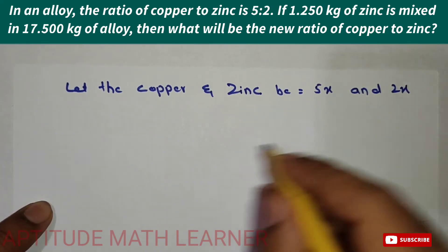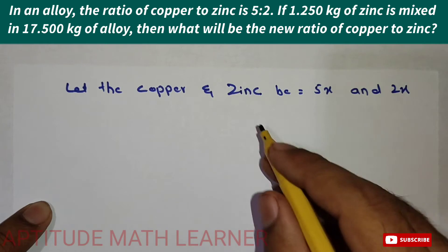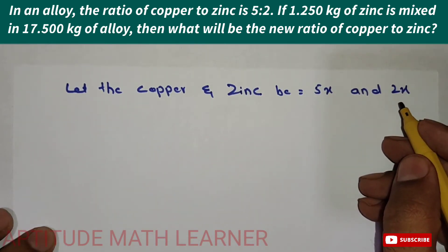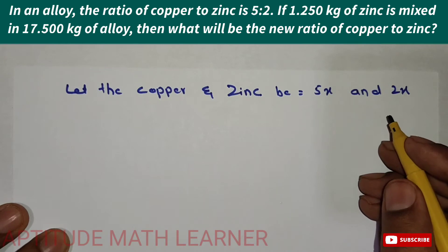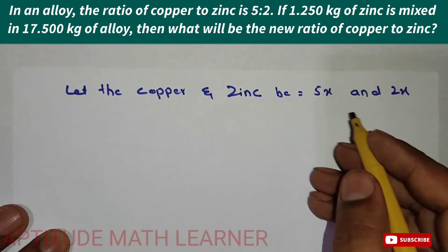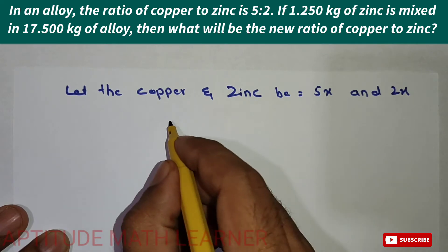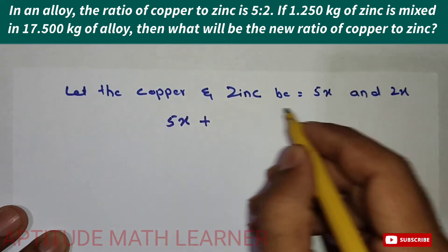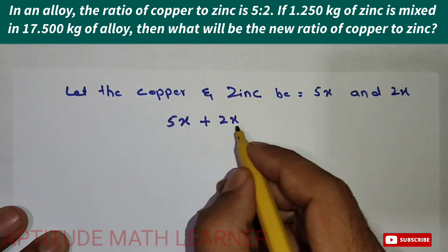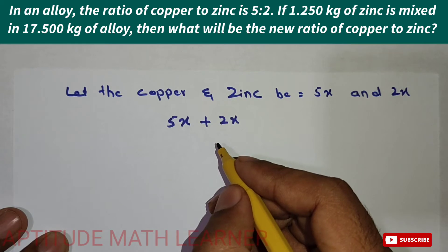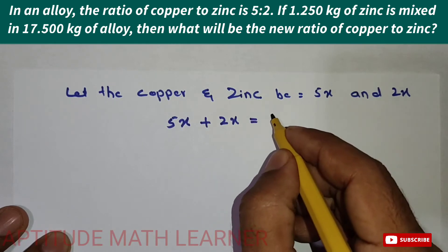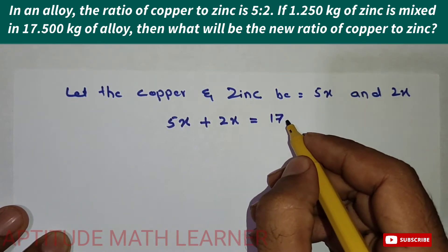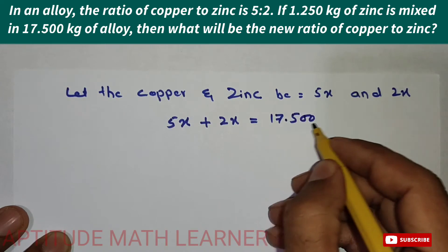We have taken copper in the ratio 5x and zinc as 2x. So the total alloy is 5x plus 2x, and the total alloy we are given is 17.500 kg.